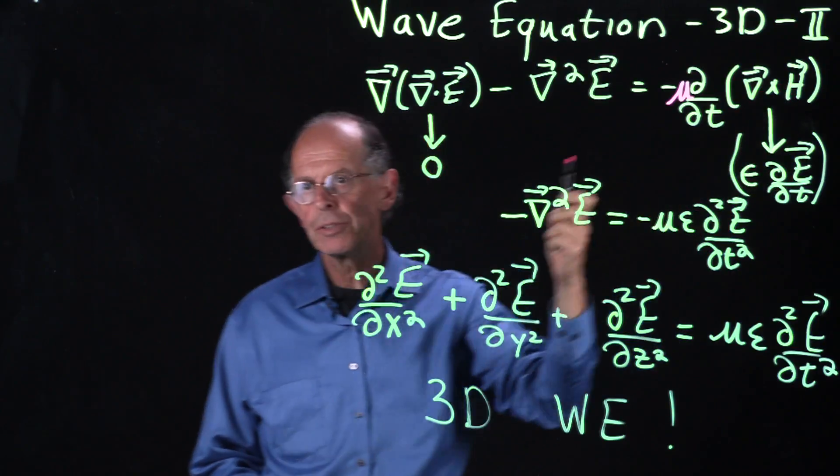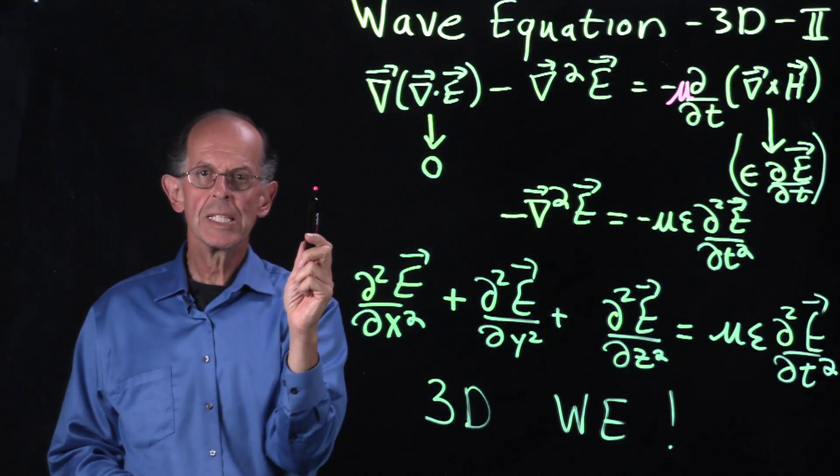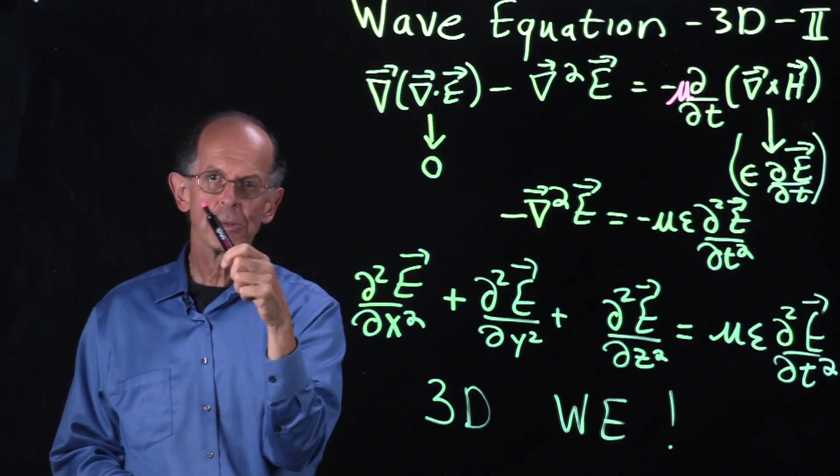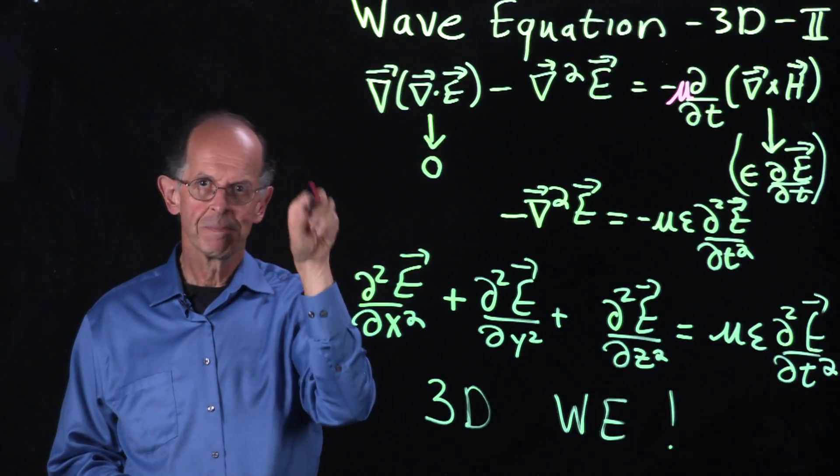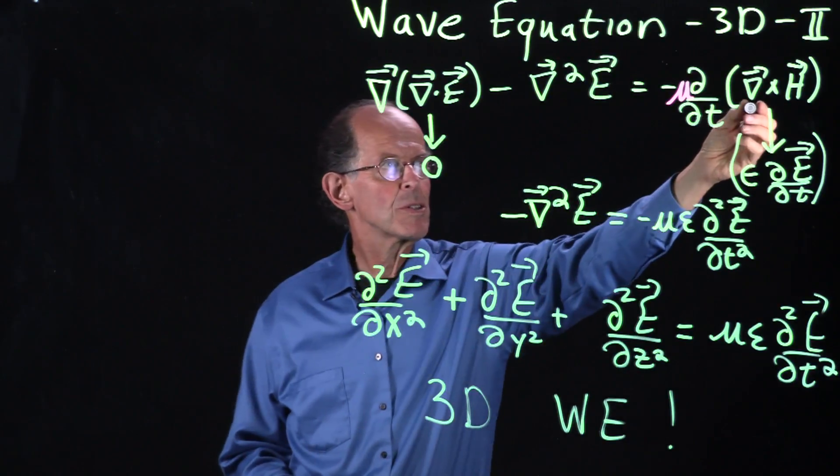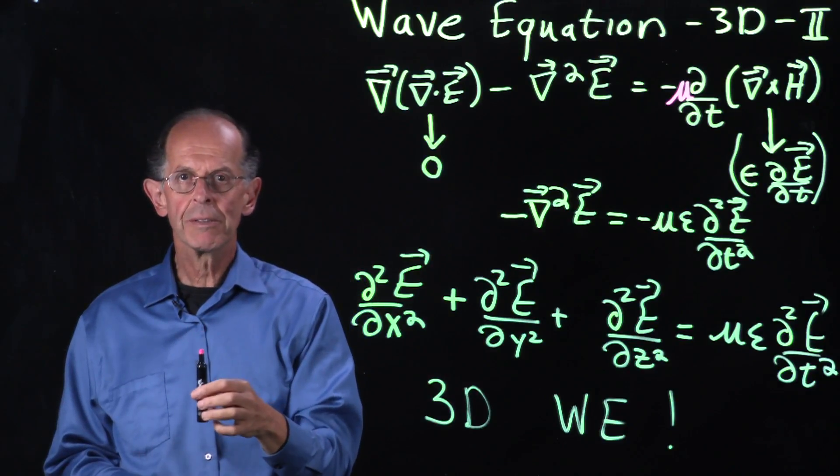The curl of H is the extraction of rotation operation. So these are the circulating field lines around the current.